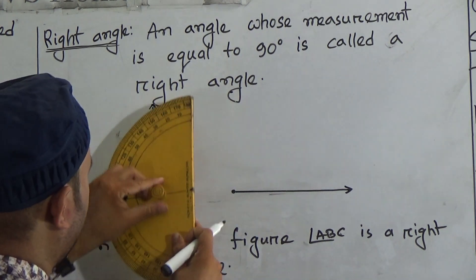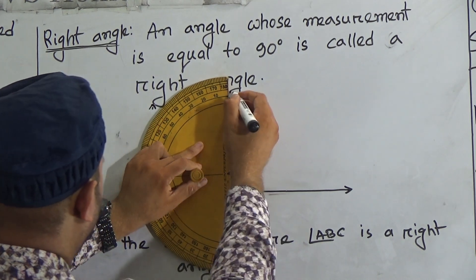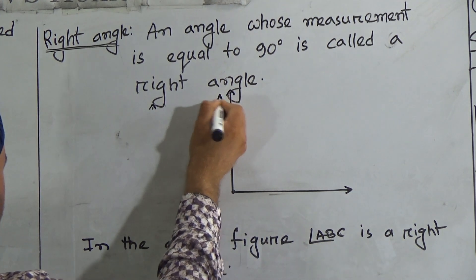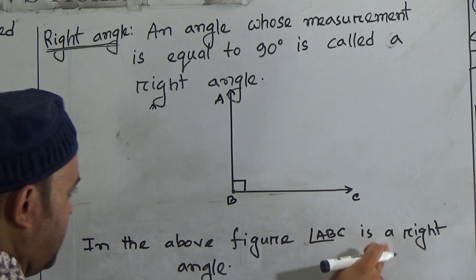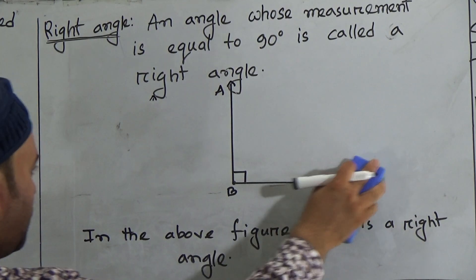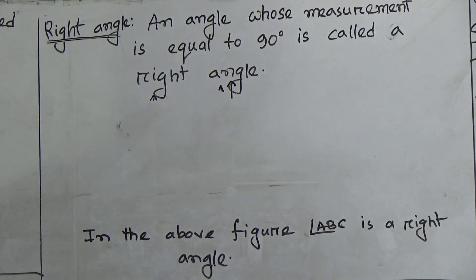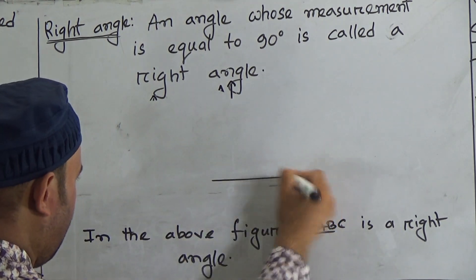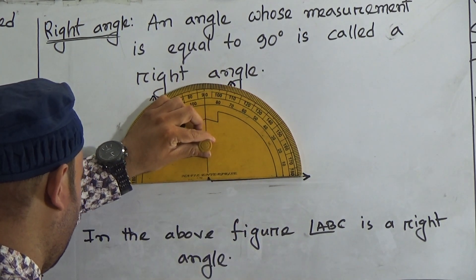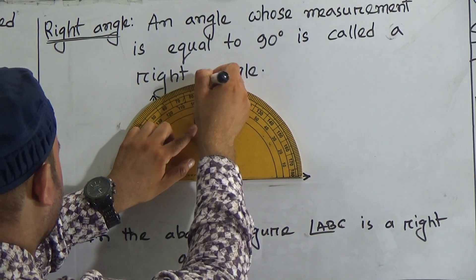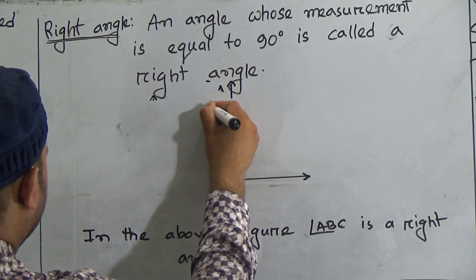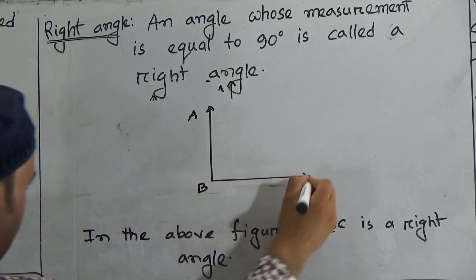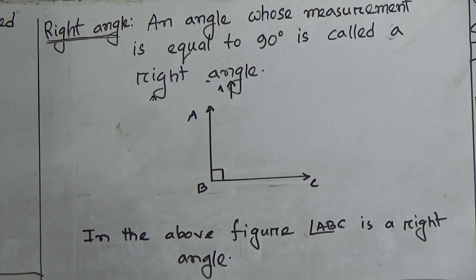Then draw another ray from this point to that point. So here ABC is called a right angle. In the above figure, ABC is a right angle. Look again attentively: first draw a ray, then put the protractor on the starting point of your ray, find out where 90 degrees is and denote it by a point, then connect this point and that point. So it is called a right angle — call this A, this B, and this C. So ABC is a right angle. Hope you understood what a right angle is and how to draw one.